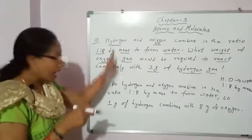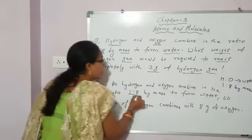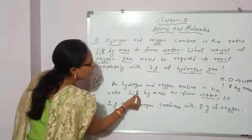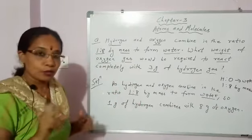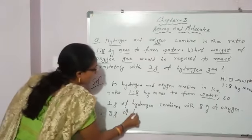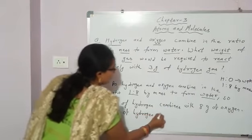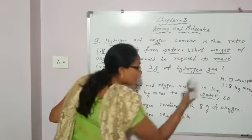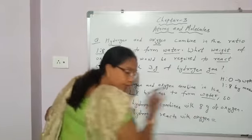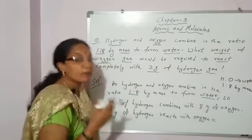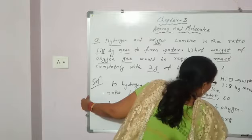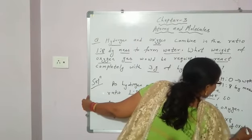What is given in the question? Hydrogen and oxygen combine in the ratio 1:8 by mass, which means 1 gram of hydrogen combines with 8 gram of oxygen. Therefore, 3 gram of hydrogen reacts with how much oxygen? 3 into 8 is equal to 24 gram of oxygen. This is your answer.